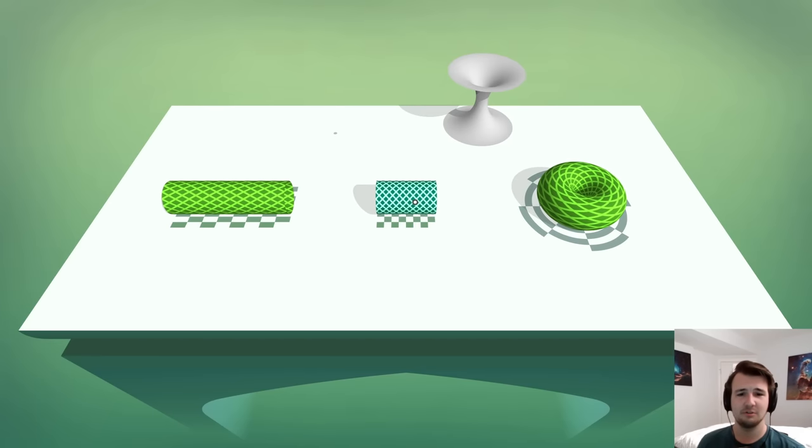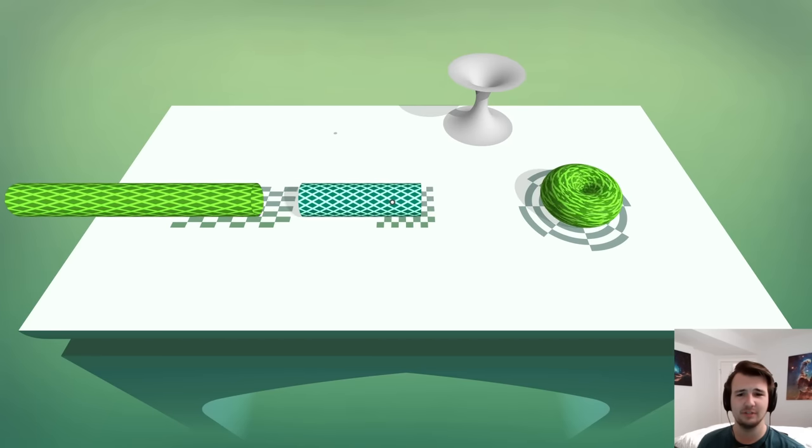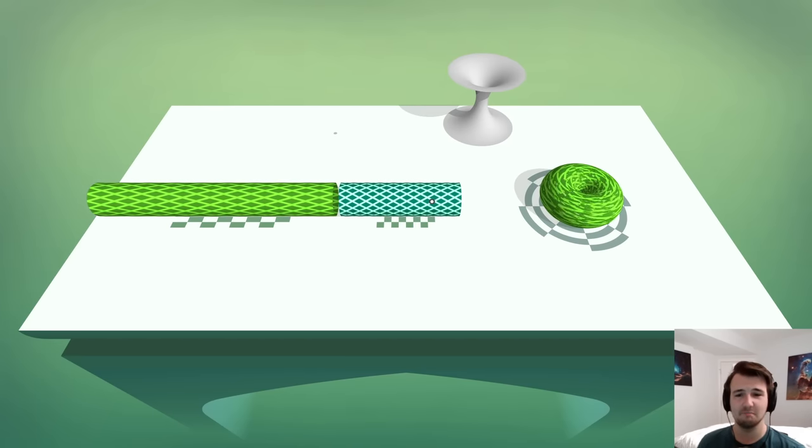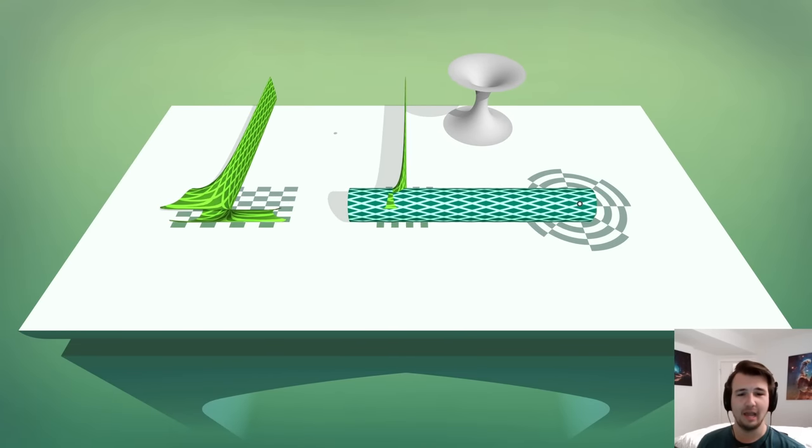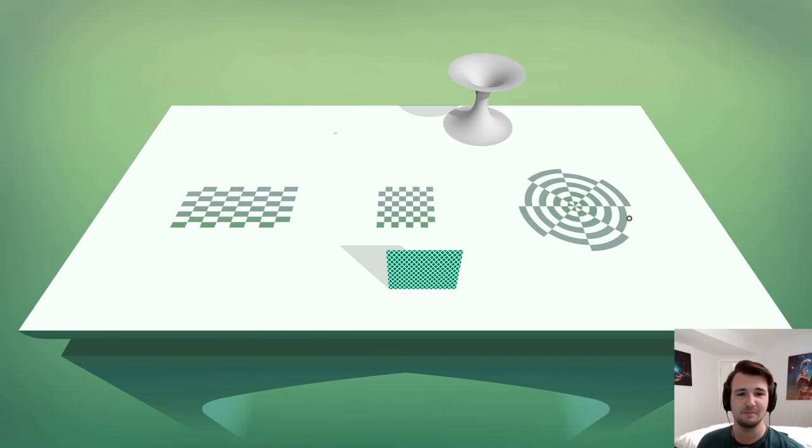I can also create a quarter donut. This creates a full donut. This is really interesting. And here it creates like a hyper donut. We're getting into weird demented zones.